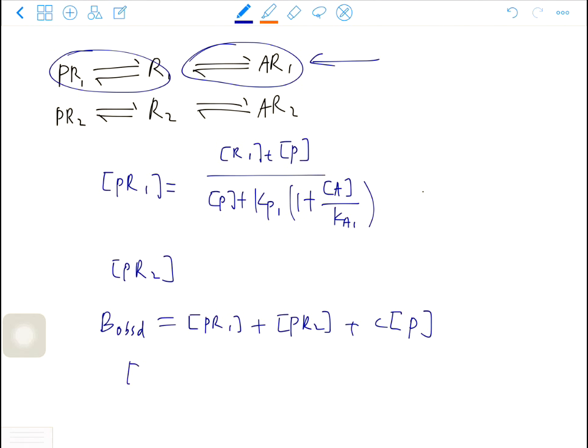The fraction of receptor 1 is the concentration of R1T over the concentration of the total receptor, which is R1T plus R2T.